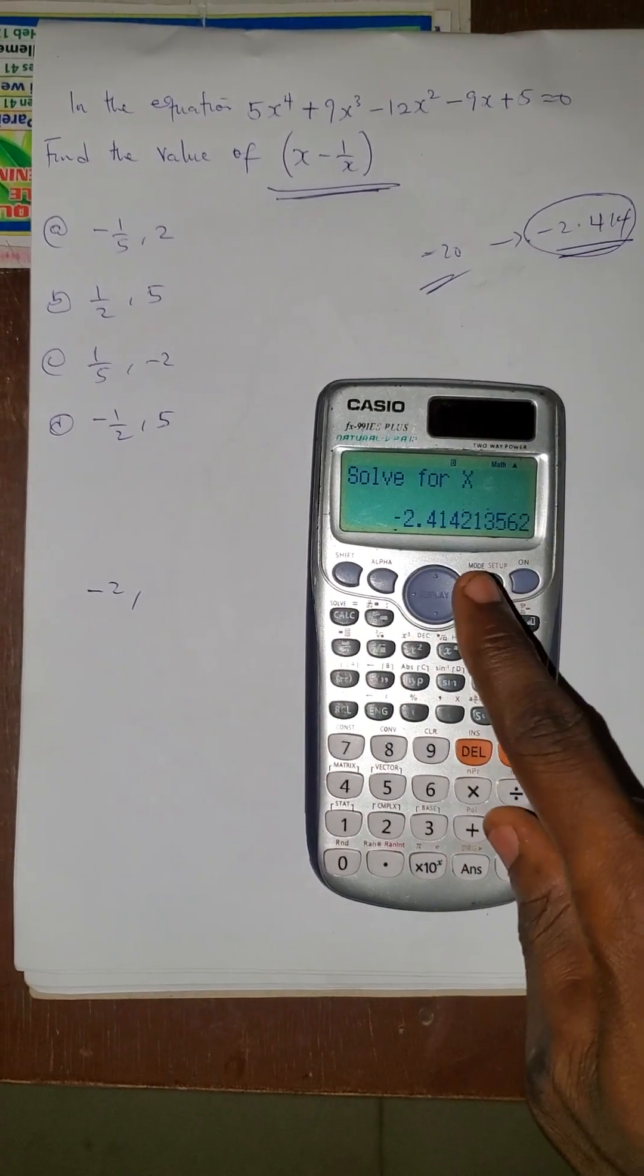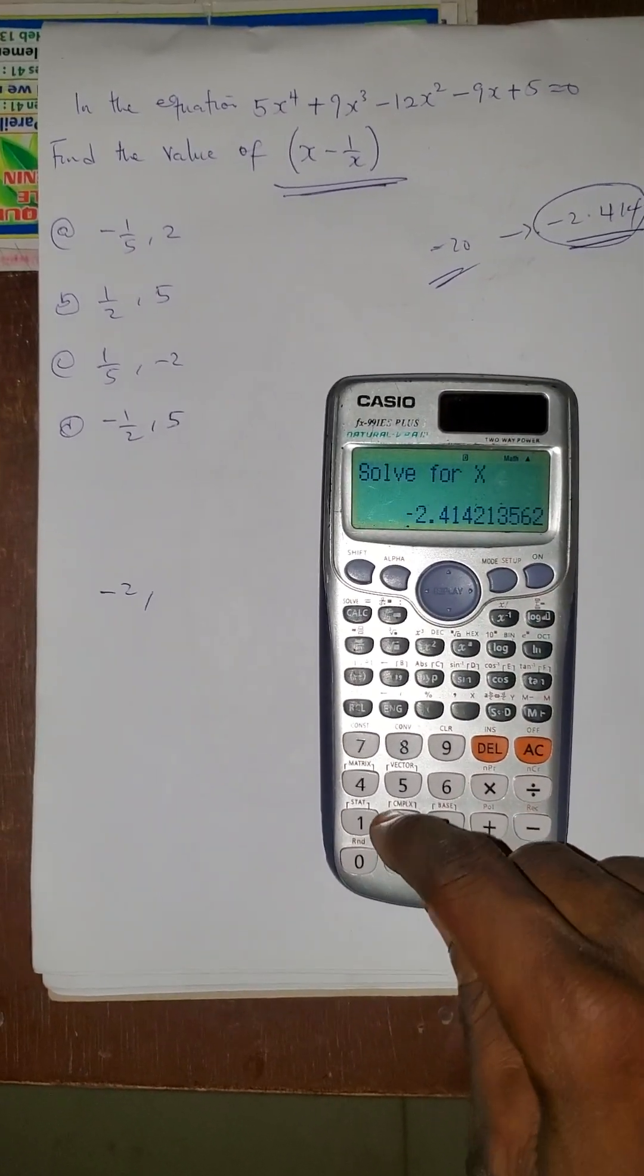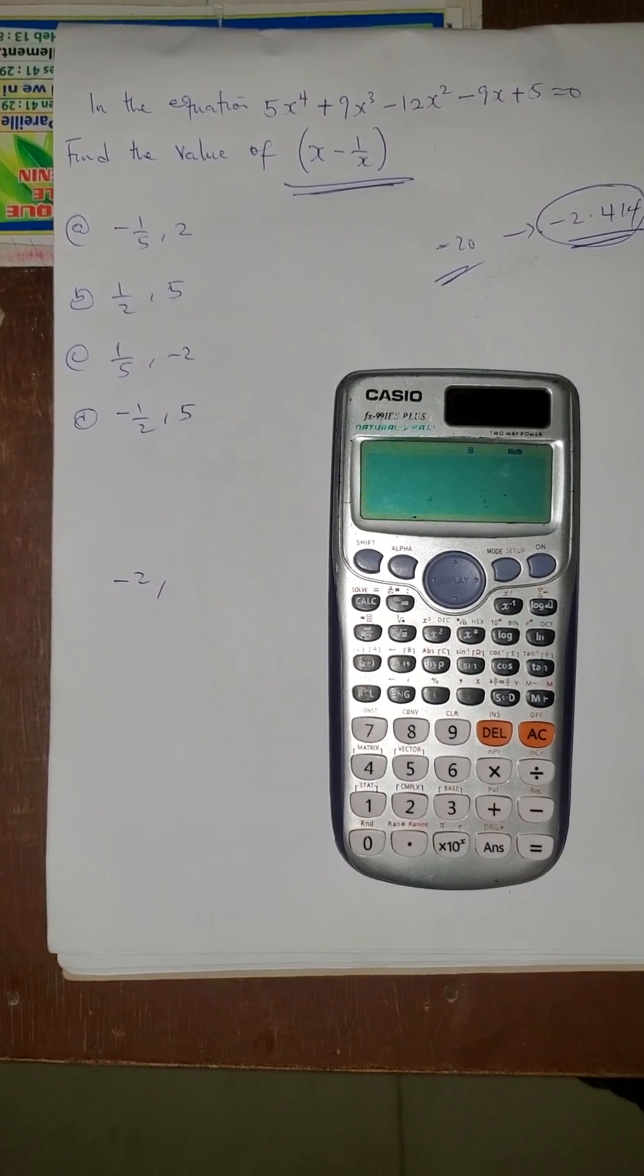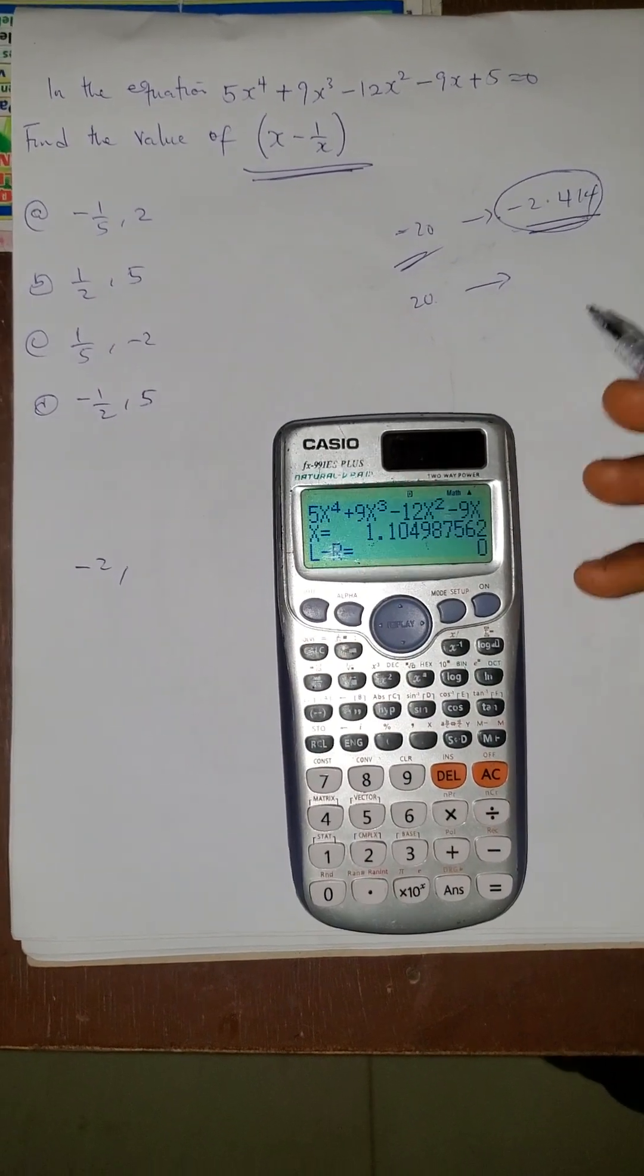Then I'll press shift calculate. You know when I got to this place the other time, solve for x, I used -20. But now I'll use positive 20. So before I used -20 and it gave me the value of x to be -2 something.